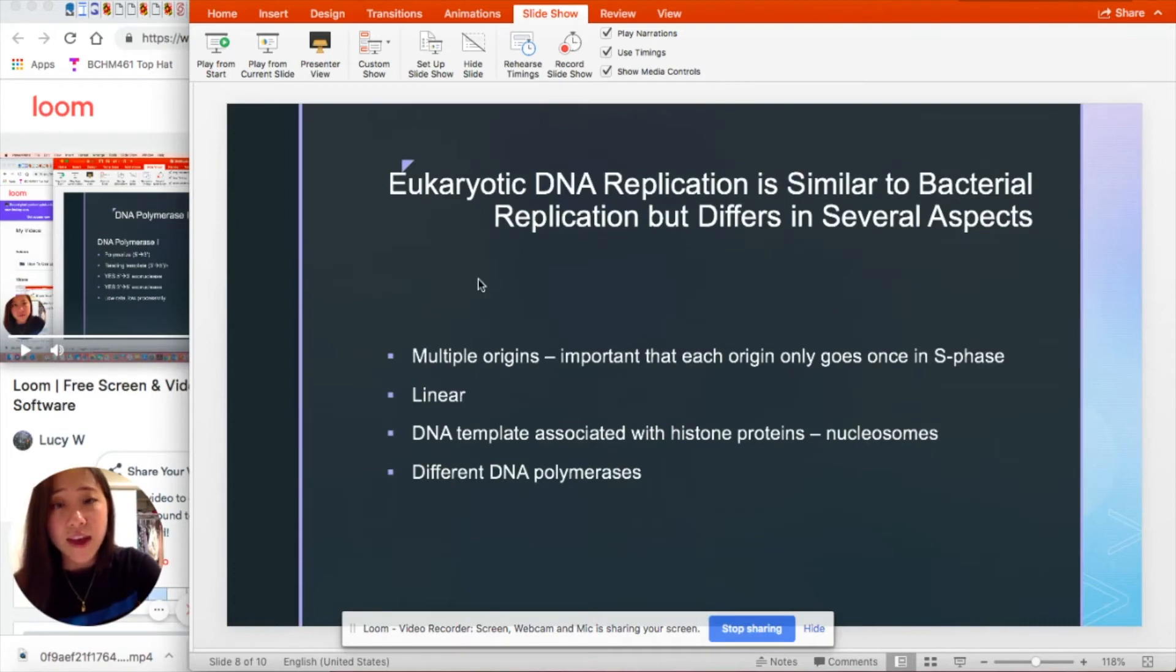Okay, and eukaryotic DNA replication is very similar to bacterial replication, aside from a few differences. Some of these differences include the fact that there are multiple origins in eukaryotic DNA. So it is important that each origin only goes in S phase once.